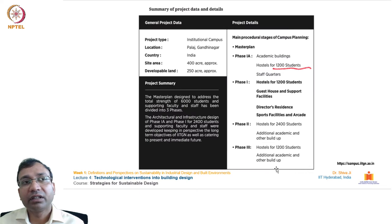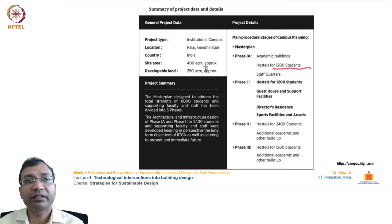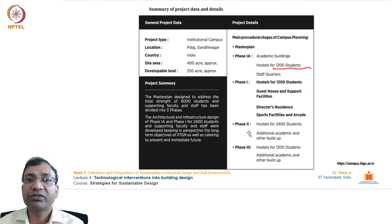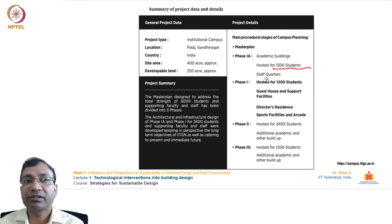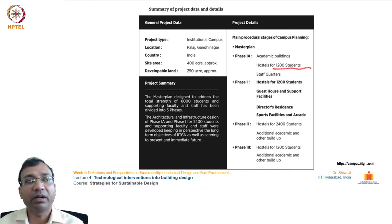Here is a brief introduction and summary of this project. It's an institutional campus located at Pallage village near the city of Gandhinagar, Gujarat, India. Site area is approximately 400 acres; developable land is around 250 acres, with the remaining 150 acres left for future expansion and green area. Phase 1A includes academic buildings and hostels for 1200 students and staff quarters. Phase 1 has a hostel for 1200 students, guest house, support facilities, director's residence, sports facilities, and arcade. Phase 2 has a hostel for 2400 students plus additional academic area, and Phase 3 adds a hostel for 1200 more students.